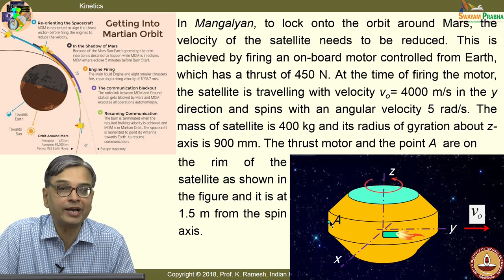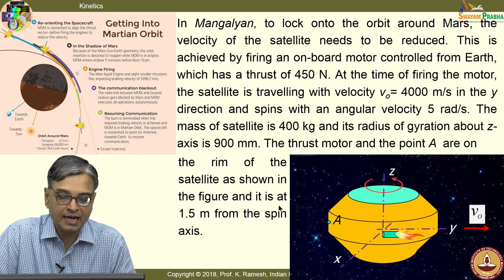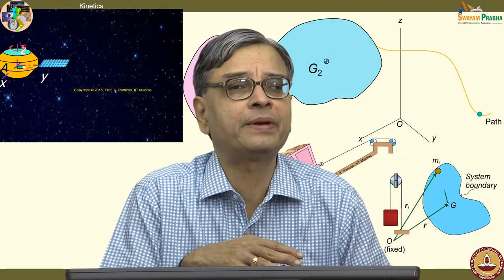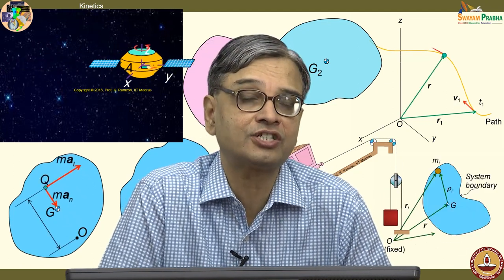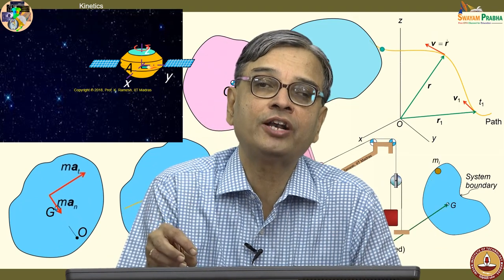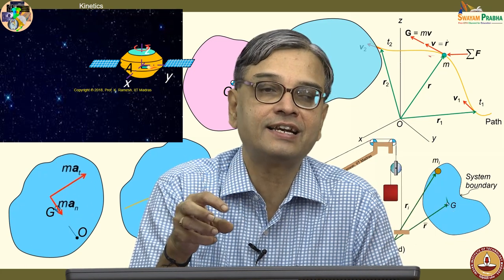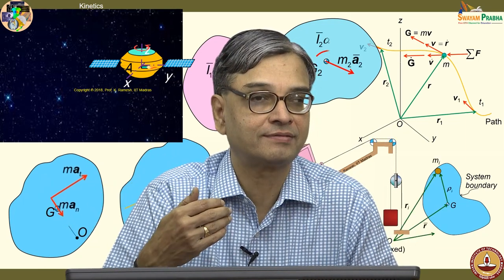The axes XYZ are attached to the satellite, and a point A is shown on the rim at 1.5 metres from the spin axis — same location as the thrust motor. This problem brings in your basic understanding of how to write the relative velocity and relative acceleration equation from one point on a rigid body to another. When attaching a non-rotating translating axis, the other point appears to undergo circular motion. All those kinematic concepts must be applied here.